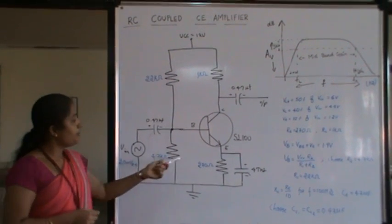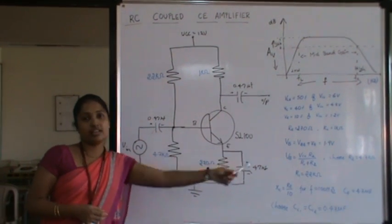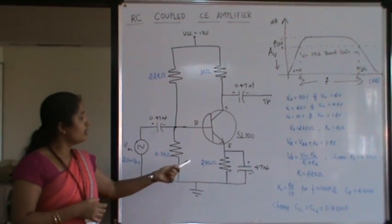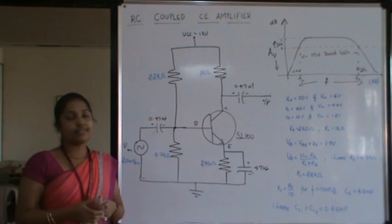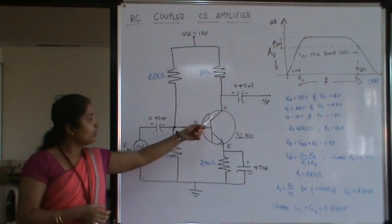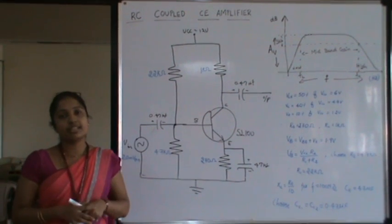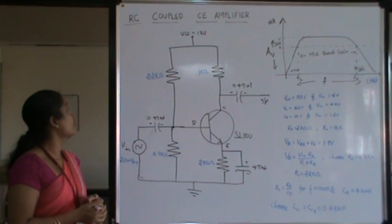Here NPN transistor SL100 is used where the base to emitter junction is forward biased and base to collector junction is reverse biased for the proper function of the amplifier.